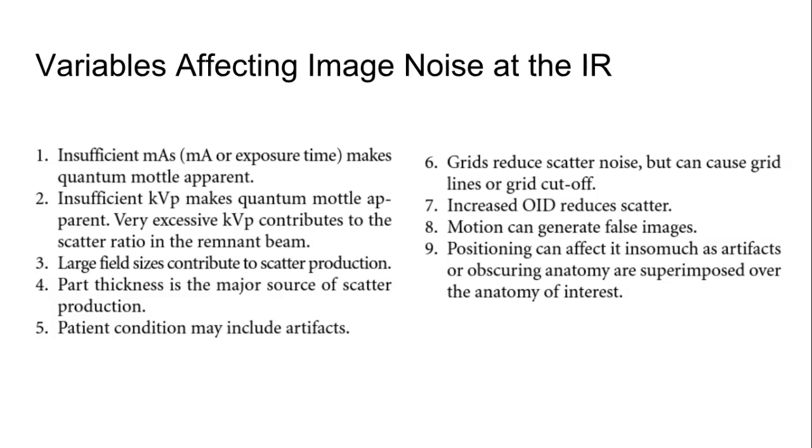Grids, we said, will reduce scatter. But there is a potential, if you use the grid incorrectly, that you can also get noise. If the alignment or the SID range is not correct when you're utilizing a grid, you can get noise. If you don't increase your exposure enough to compensate for the grid ratio, then again, you can get a quantum mottle, right? You just wouldn't have enough data again.